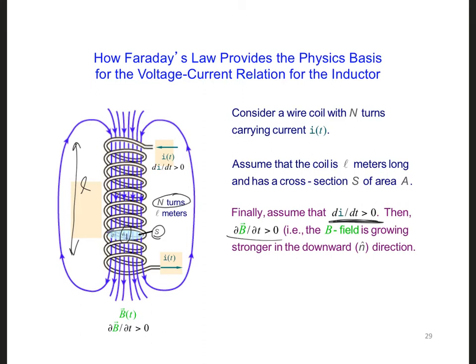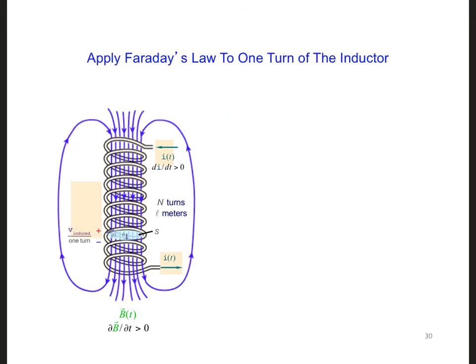So, db dt is also getting bigger and bigger in the N-hat direction. If we apply Faraday's law to just one turn of the coil, we get V induced for one turn is equal to minus the area, the surface integral of db dt dotted with N-hat ds. That's a T.